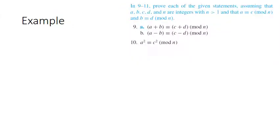Now let's prove the following statements. I'm going to do problem 9 part b and problem 10. We're assuming that a, b, c, d, and n are integers with n greater than 1, with a congruent to c mod n and b congruent to d mod n. Starting with 9b, let me write down what we're allowed to assume.